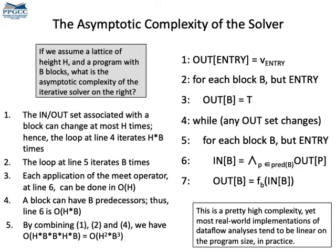But, of course, in practice, that's much lower than that. We had discussed that before when we talked about the chaotic iterations. This H²B³ cost is just a theoretical bound on chaotic iterations.